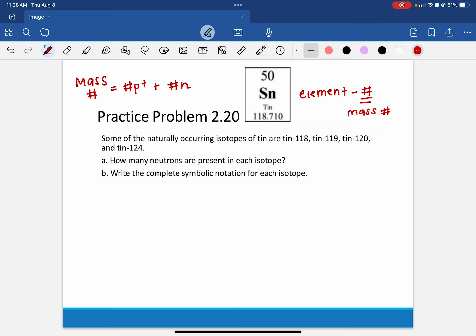So it's just another shortened way to write isotopes whenever you're talking about isotopes. So we have tin-118, tin-119, tin-120, and tin-124.